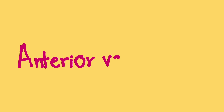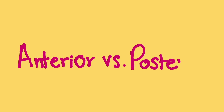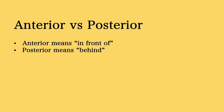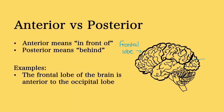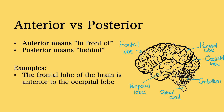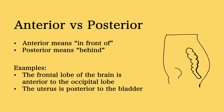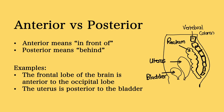Then we have anterior and posterior. Anterior means in front of and posterior means behind. An example is that the frontal lobe is anterior to the occipital lobe. Another example is that the uterus is posterior to the bladder.